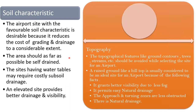Regarding topography: topographical features like ground contours, trees, and streams should be avoided when selecting an airport site. A raised ground like a hilltop is usually considered an ideal site for an airport because it grants better visibility due to less fog, permits easy natural drainage since water flows away from the top, and the approach and turning zones are less obstructed.